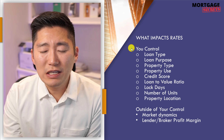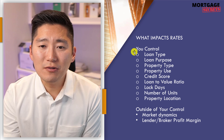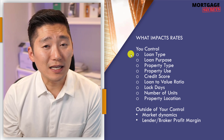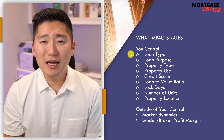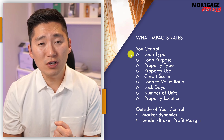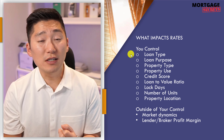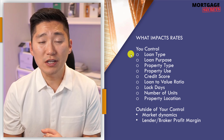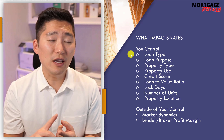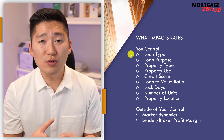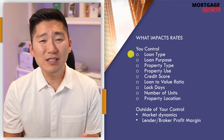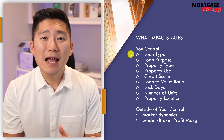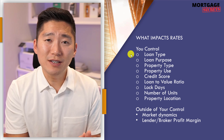Now here in what you control, let's go down the list. First is loan type. What I mean by that is a conventional or conforming loan, a non-conforming loan like a jumbo loan, an FHA loan, a VA loan, or a USDA loan. All these types of loans actually impact how rates are going to be.